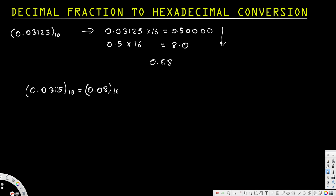Now let's look at another example with an integer. Let's say we have 268.62 base 10. The fraction method we just did applies to the fraction part only. For the integer part, we divide until we get 0. Let's take the integer 268 and divide by 16, since for hexadecimal the base is 16.